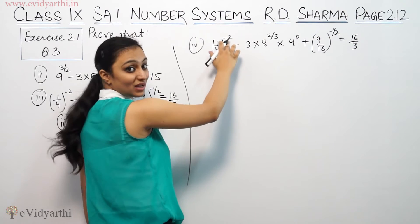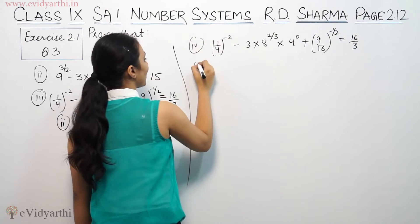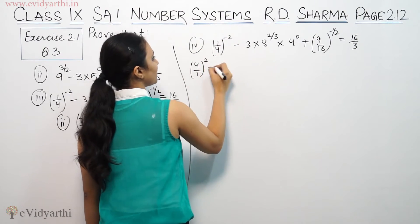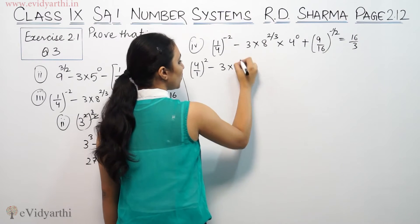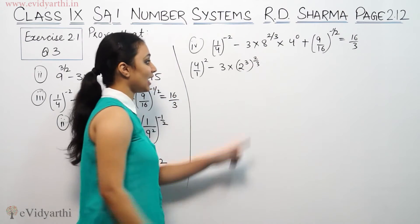So, 1/4, this power is negative. It's a power negative, so it's reciprocal and make it 4/1 square. Minus 3 into 8 to the power 2/3. It's 2 cube. So, that's 3 or 3 cancel.